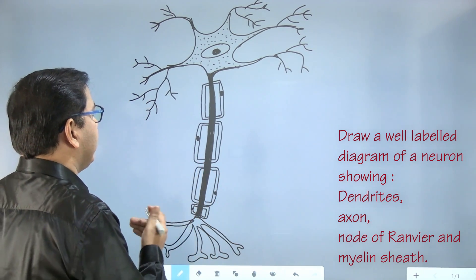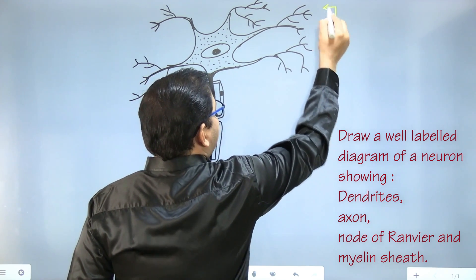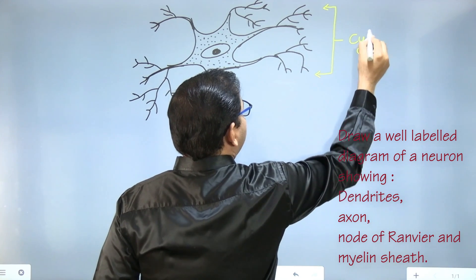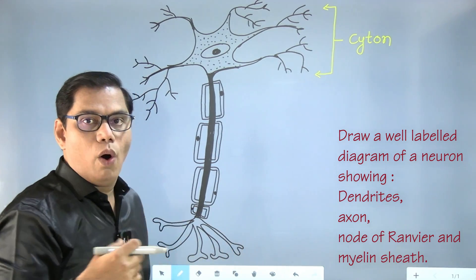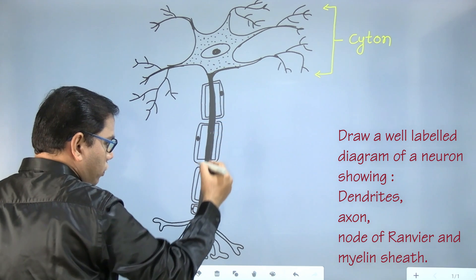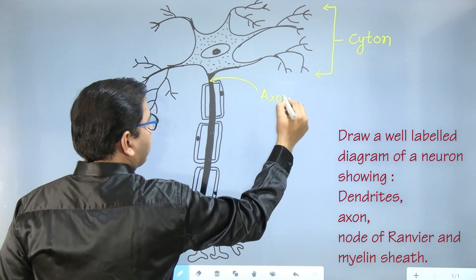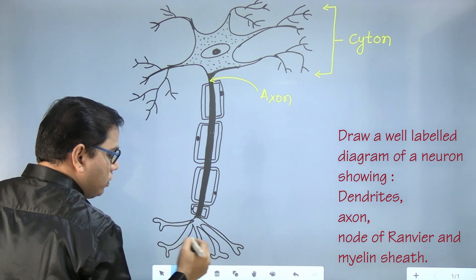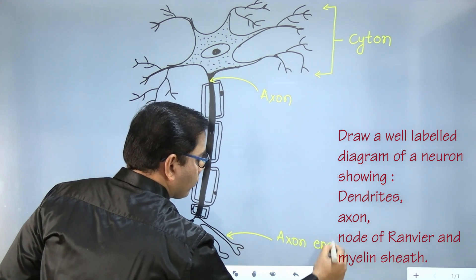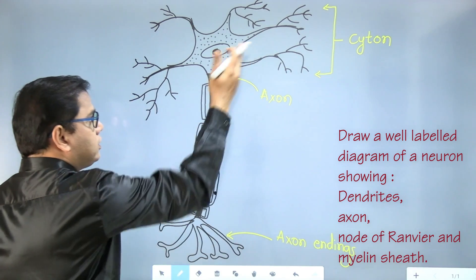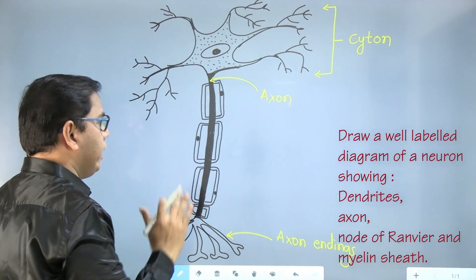Now let us start labeling the diagram. This first part which you see is called cytone or cell body or pericarrion, but we will write the name as cytone. And this is called axon. And finally, this axon divides into these branches. They are called axon endings.